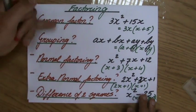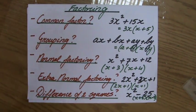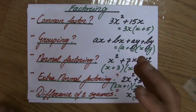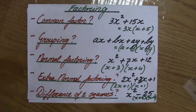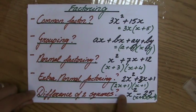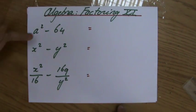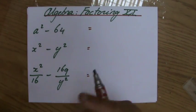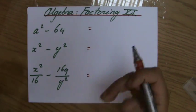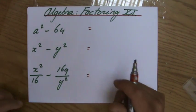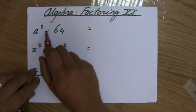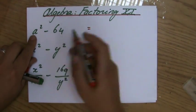We are asking ourselves every time these questions: Is there a common factor? Can I factorize it by grouping? Is it normal factoring? And the last one is, is it the difference of two squares? And that is a beautiful opportunity to show everybody what a great mathematician you are. The difference, yeah, subtraction of two squares.